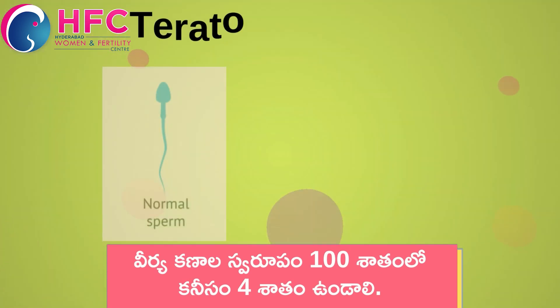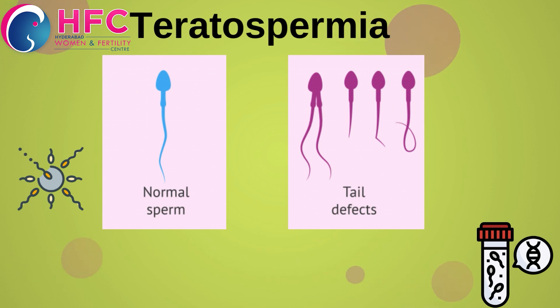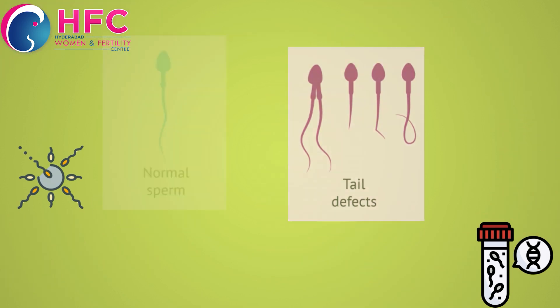If you check 100 sperm cells, a minimum 4% normal morphology is required. Poor morphology is called Teratozoospermia. This terminology is different from Oligospermia, which refers to low count.